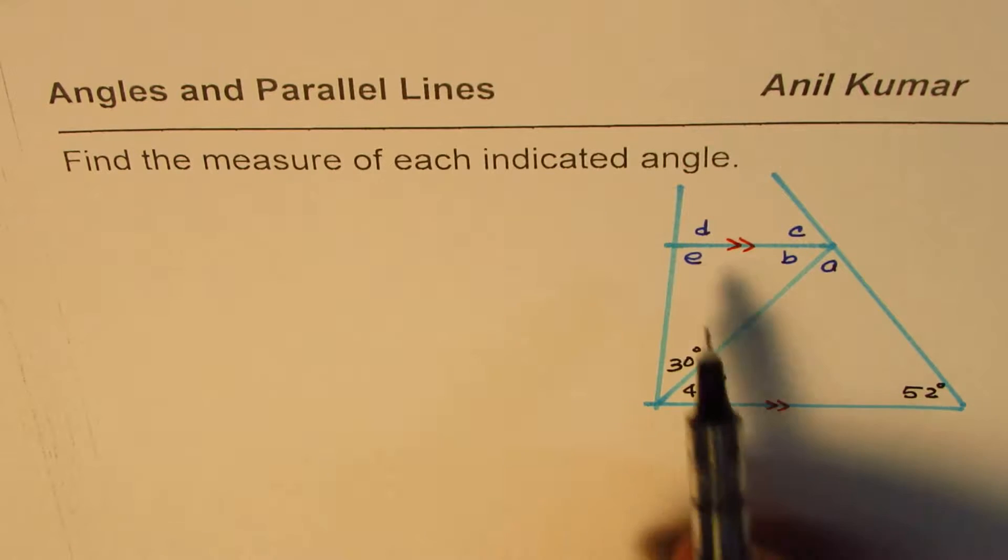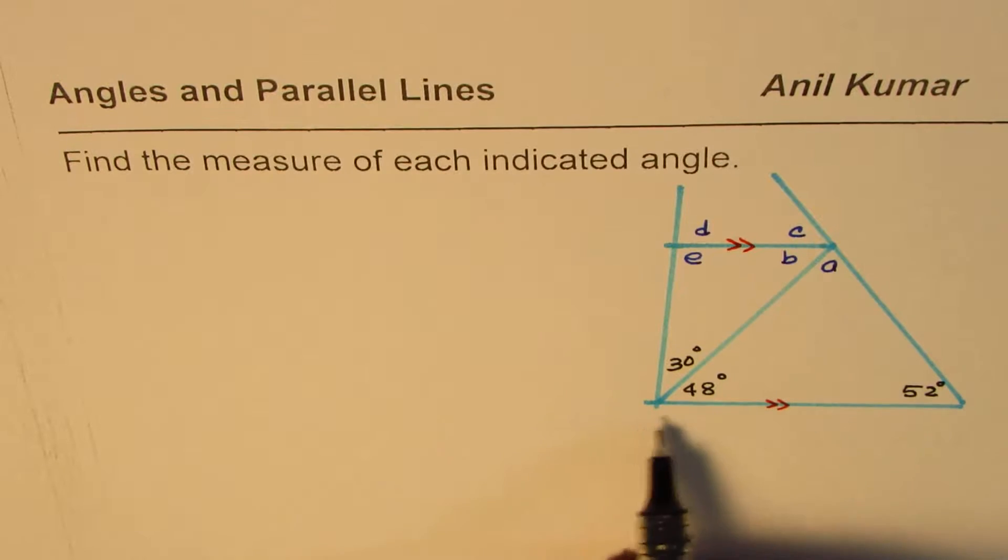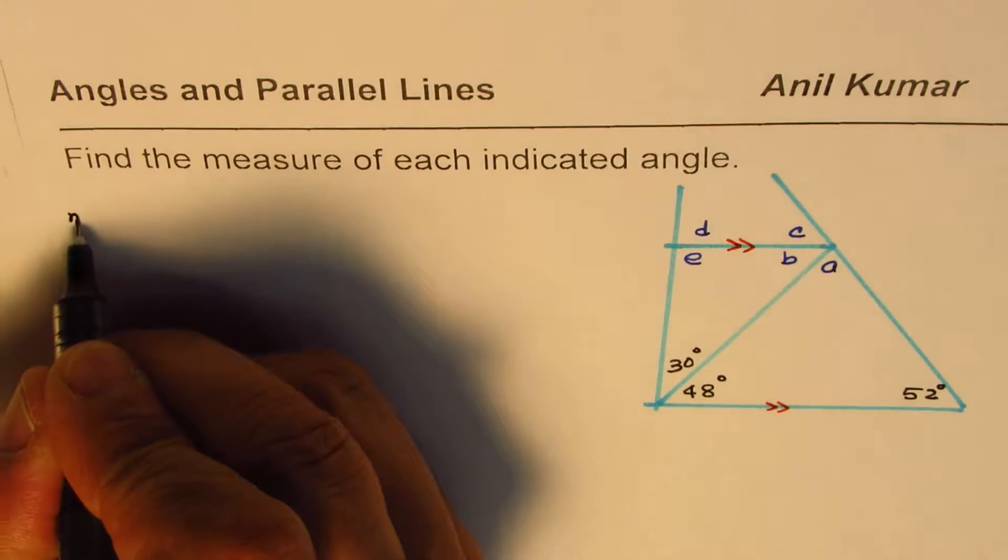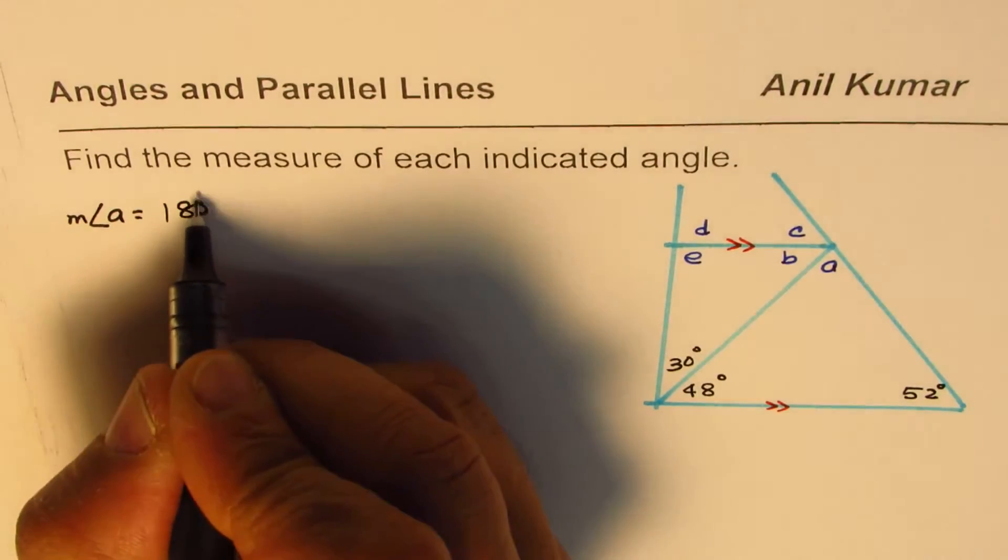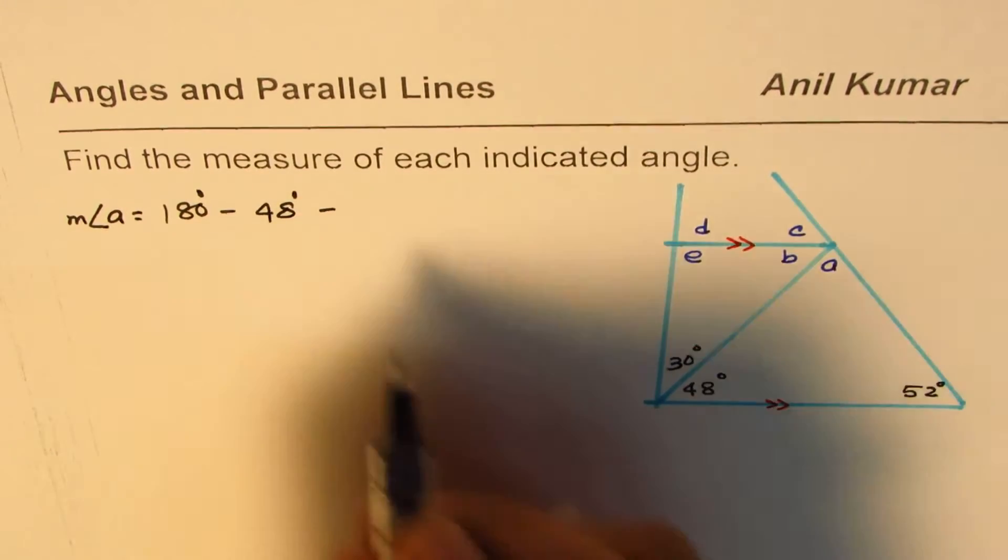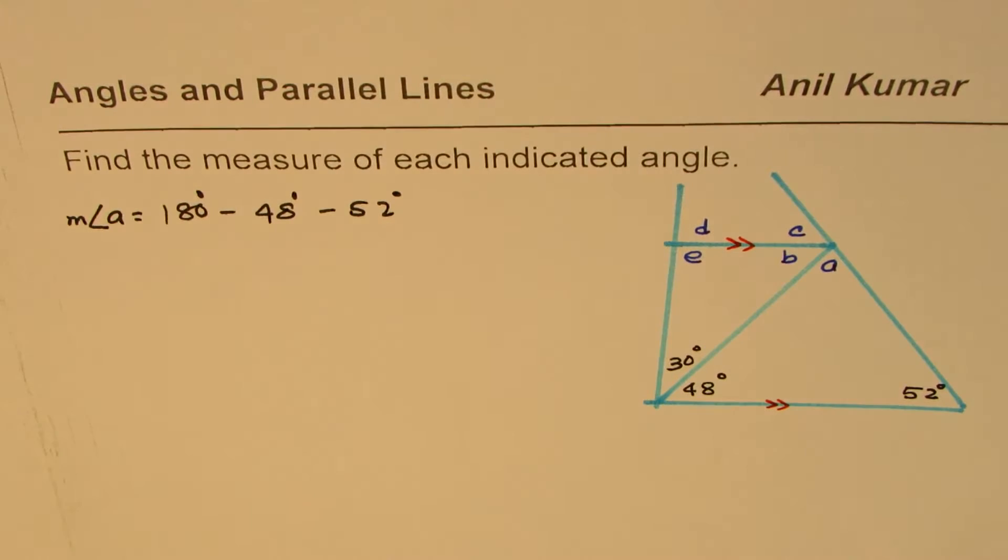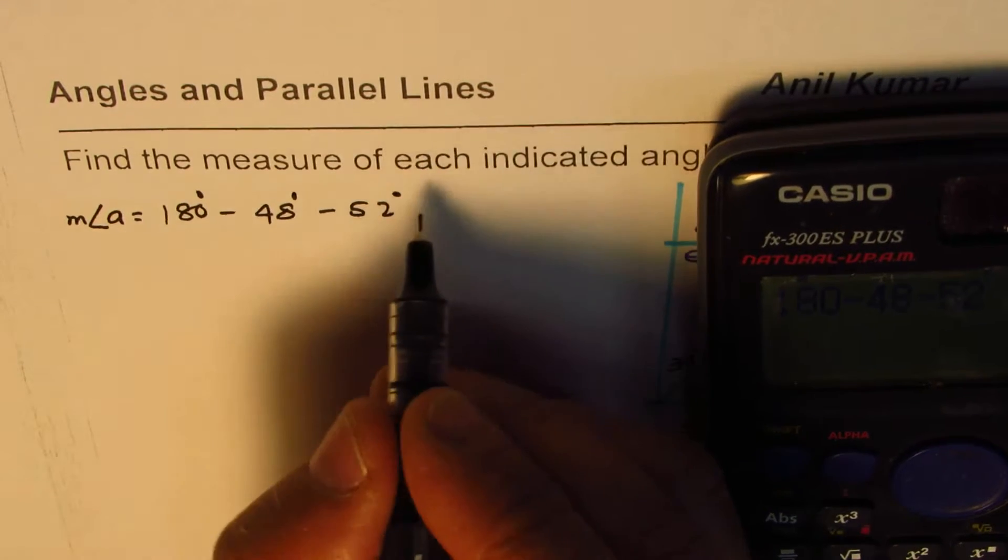Let's begin by finding angle A, which is inside a triangle. Sum of angles in a triangle is 180 degrees, so measurement of angle A will be equal to 180 degrees take away these two. Take away 48 degrees and take away 52 degrees. If calculator is allowed, use the calculator, otherwise you can just do this math. 180 minus 48 minus 52 equals 80 degrees. So measurement of angle A is 80 degrees.